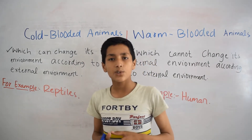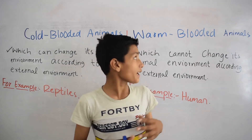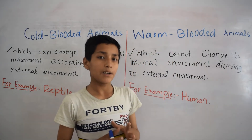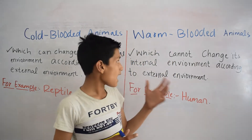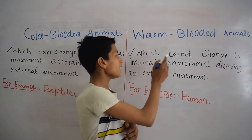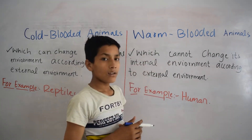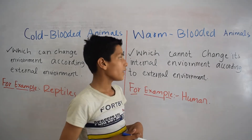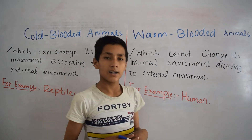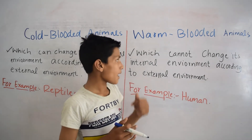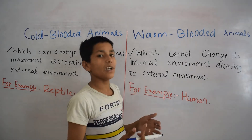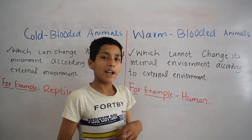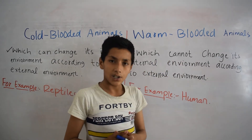Let us come to another type, which is warm-blooded animals. Warm-blooded animals are the types of animals which cannot change their internal environment according to the external environment. These types of animals have no ability to change their internal environment according to the external environment.